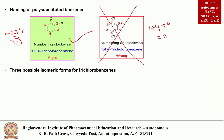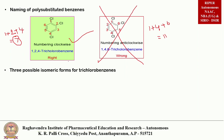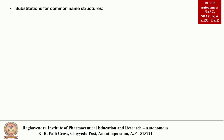There are three possible isomeric forms for trichlorobenzene: 1,2,3-trichlorobenzene; 1,2,4-trichlorobenzene; and 1,3,5-trichlorobenzene. These are the three possible isomeric forms.